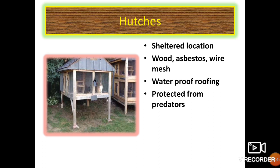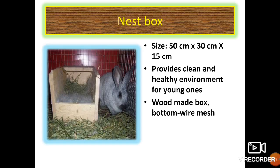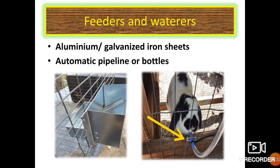Hutches should be located in a sheltered location and made of wood, asbestos or wire mesh. They should have waterproof roofing and be protected from predators. For nest boxes, the general size is 50 x 30 x 15 cm; they provide a clean and healthy environment for kits. The box is made of wood with a wire mesh bottom and allows the doe to take care of the kits. Feeders are made of aluminium or galvanized iron sheets and can be attached to the front panel of the cage, filled from outside without opening the cage door.